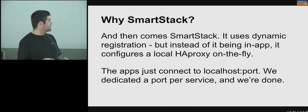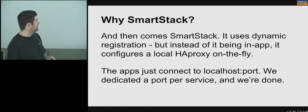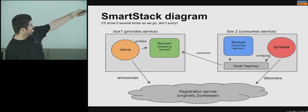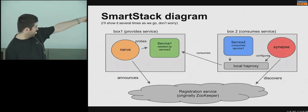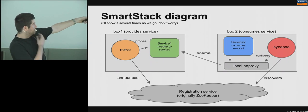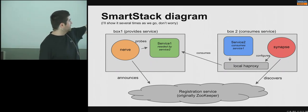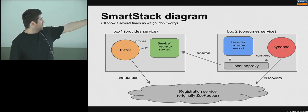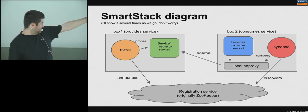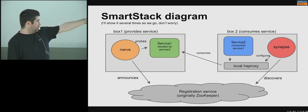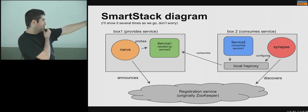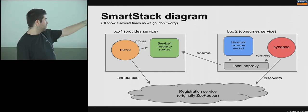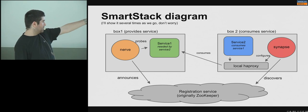Here's the whole diagram of how it works. Service Two wants to consume Service One. All it knows is a port number, which can even be configured through Chef or whatever — it's a static port number.